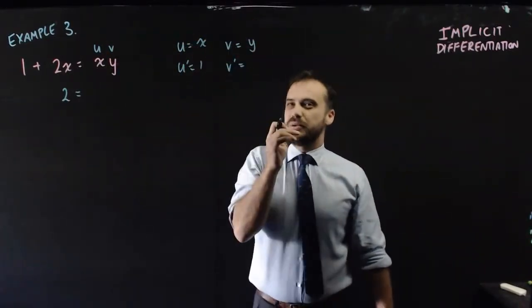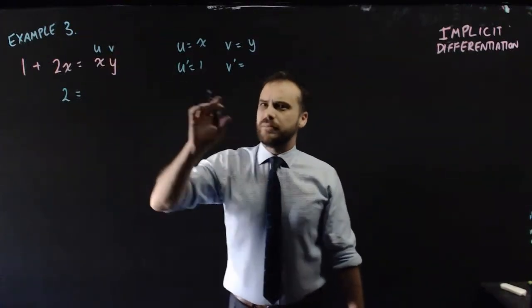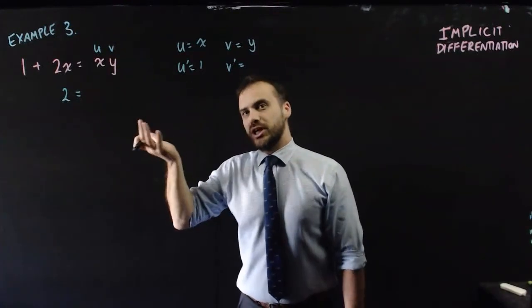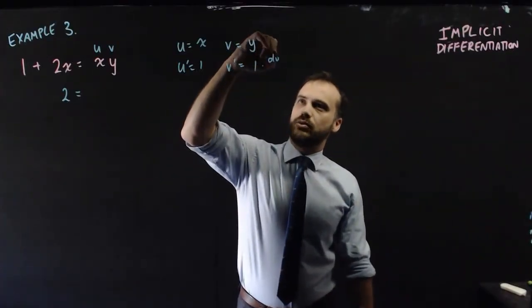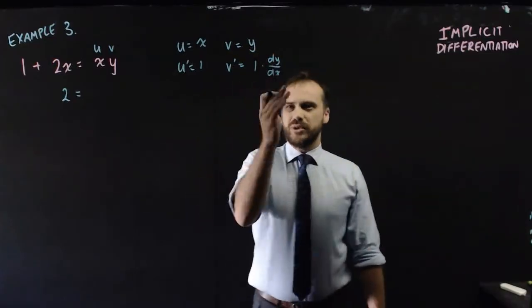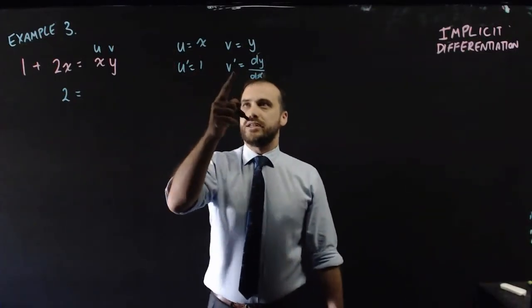v is y. But the derivative of y, what is that? Well, it's 1, but it's implicit differentiation that we're doing here. So it needs to be 1 times dy/dx, which is just dy/dx. And now we get u v', x dy/dx,